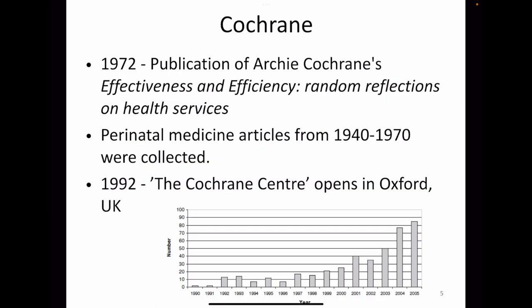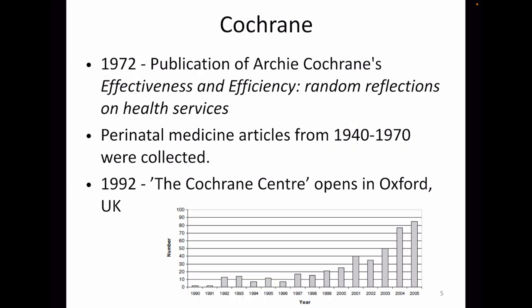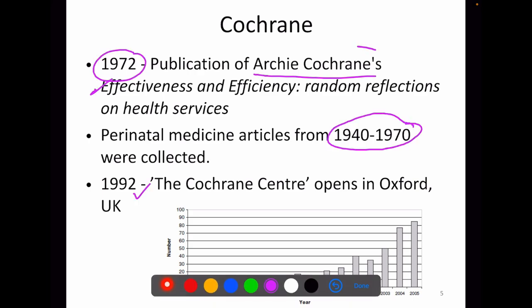We cannot separate Cochrane from meta-analysis because Cochrane has a huge role in pioneering and trending this study design of meta-analysis. In 1972, there was a first meta-analysis published by R.K. Cochrane, covering articles related to perinatal medicine from 1940 to 1970. The name Cochrane Collaboration was named after the British healthcare researcher R.K. Cochrane. Later, the Cochrane Center was opened in 1992.